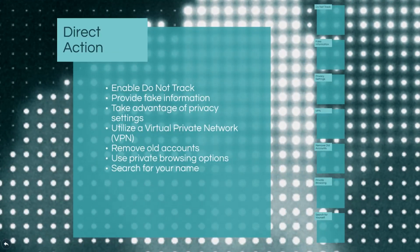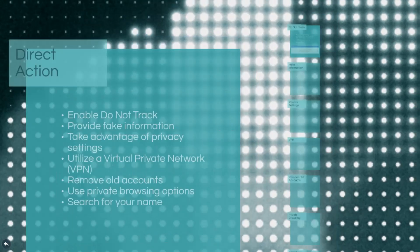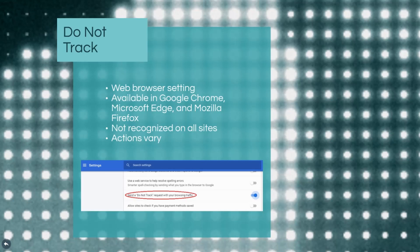There are also several direct actions an individual can utilize. When you go online, you can protect your privacy by enabling the Do Not Track setting in your web browser. All major browsers allow individuals to easily turn on the Do Not Track function. However, while this is easy to implement, it provides limited benefits since most websites simply ignore this request. Additionally, since there is no accepted industry standard, the actions taken by different websites to address the Do Not Track feature can vary greatly.